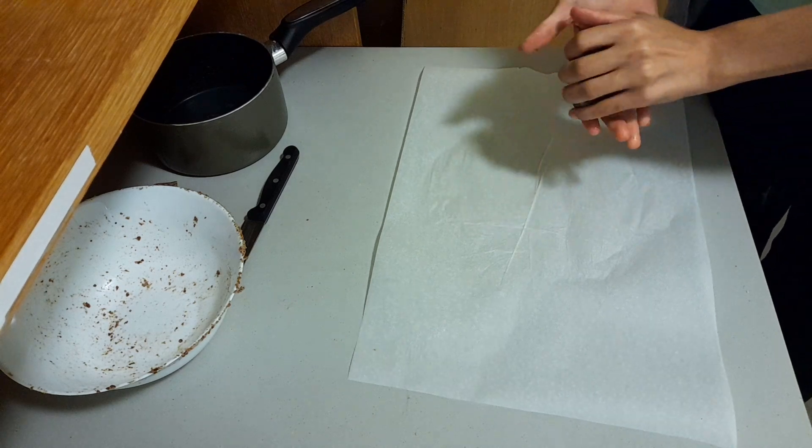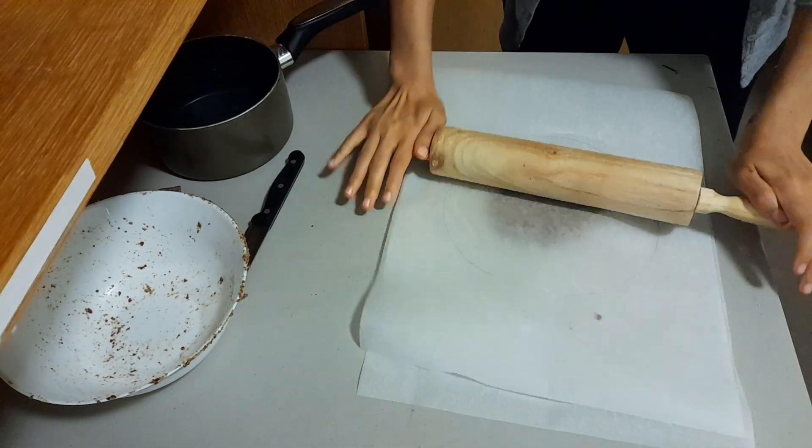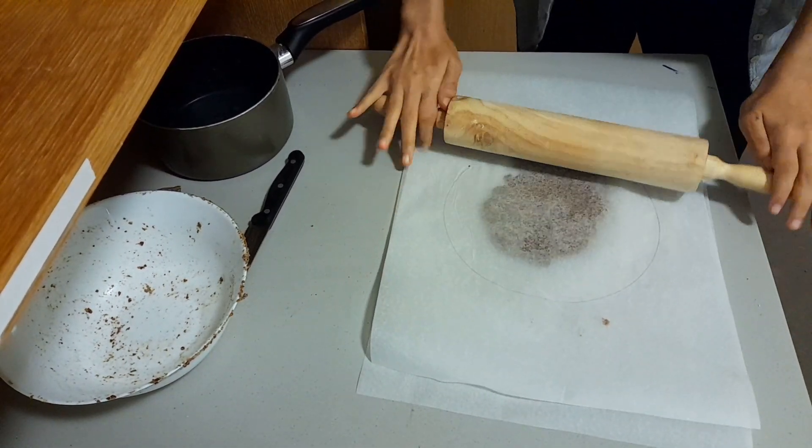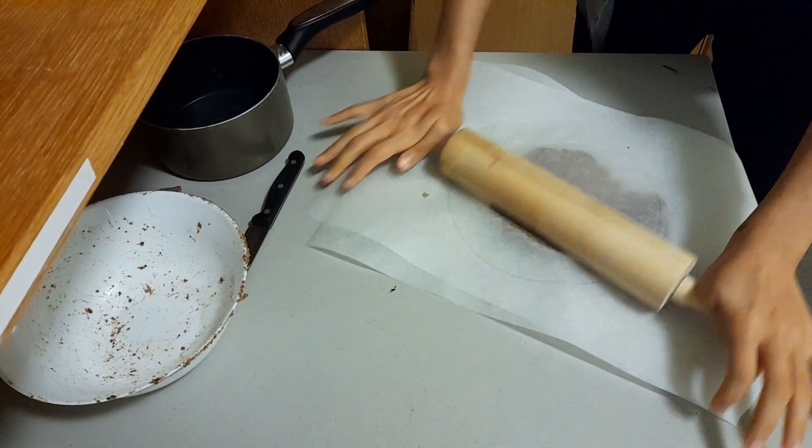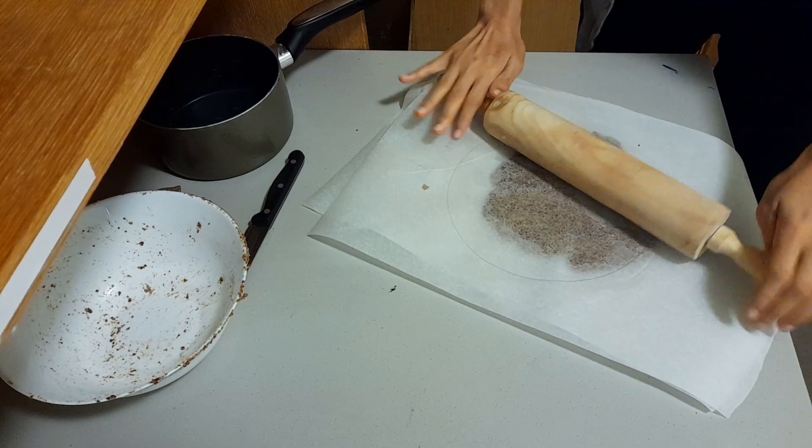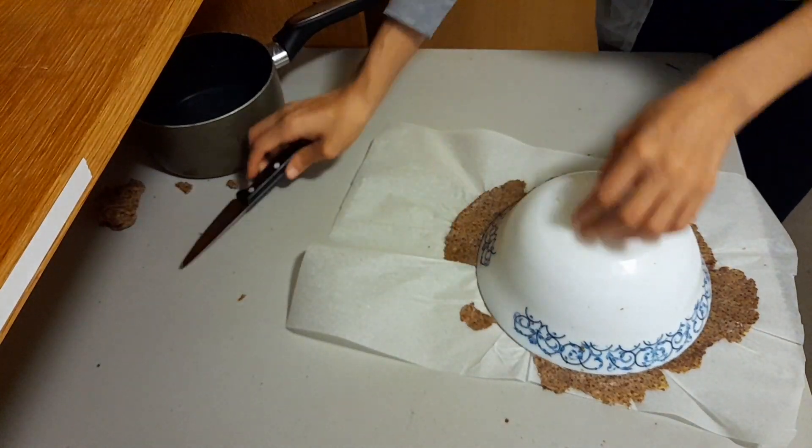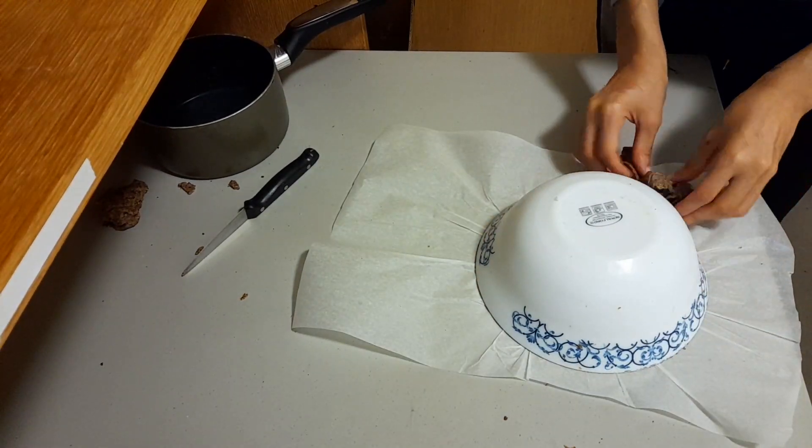Now we move on to rolling out the stove version dough. As you can see, it's a lot more flexible and easier to manipulate into whatever shape and size you want. The rolling process with this dough was much faster as a result. Remove the excess dough so you can have your desired shape.